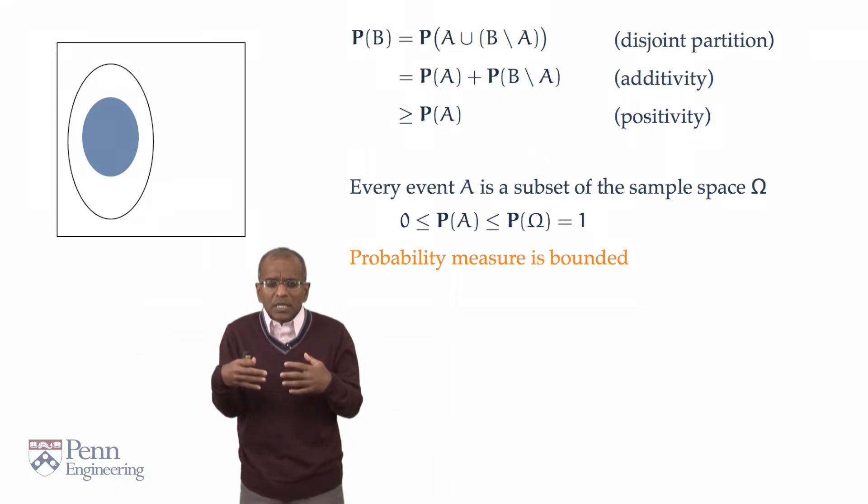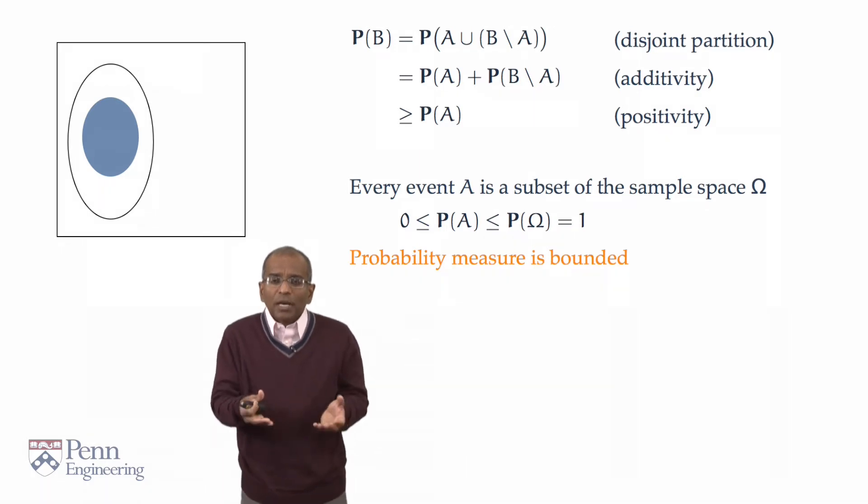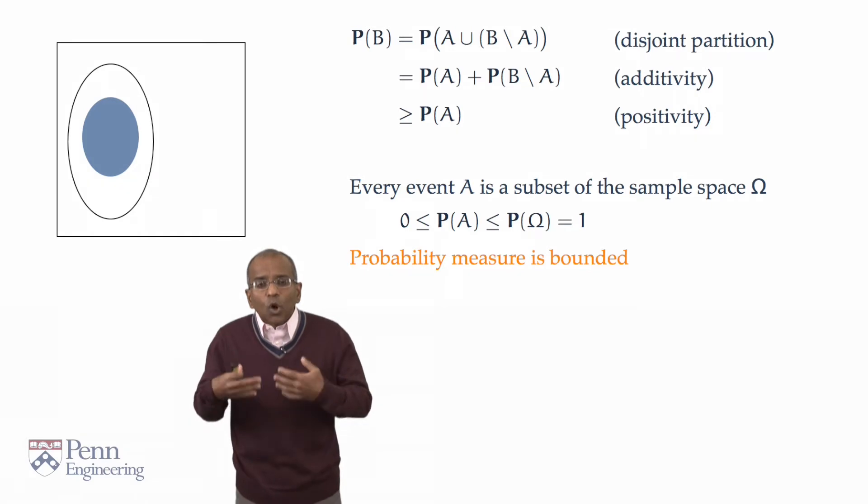Again, notice that this is intuitive. One is tempted to make this a part of the axiomatic structure, but it is not necessary. This is an inevitable consequence of our spare axioms of positivity, normalization, and additivity.